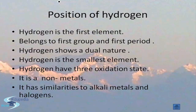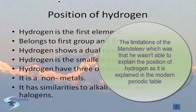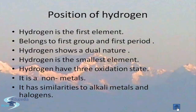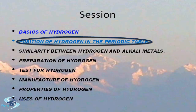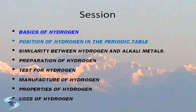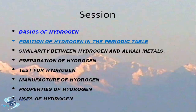This concludes our presentation and discussion about the position of hydrogen. We covered the position of hydrogen in both periodic tables, and the limitation of Mendeleev's periodic table in explaining the position of hydrogen compared to the modern periodic table. In the next session, we shall learn about the similarities between hydrogen and alkali metals, and also discuss the similarities and dissimilarities between alkali metals and halogens.